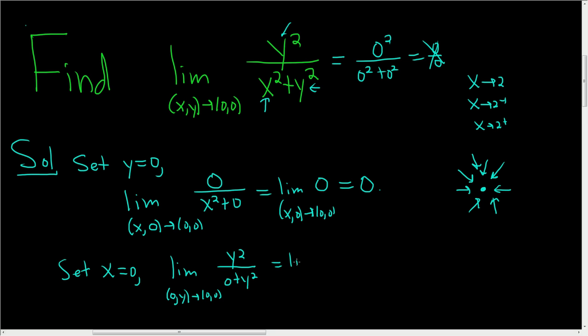So this is the limit as y approaches (0,0). So this is y squared over y squared. This cancels, so we have the limit as y approaches (0,0) of 1, and so we get 1.